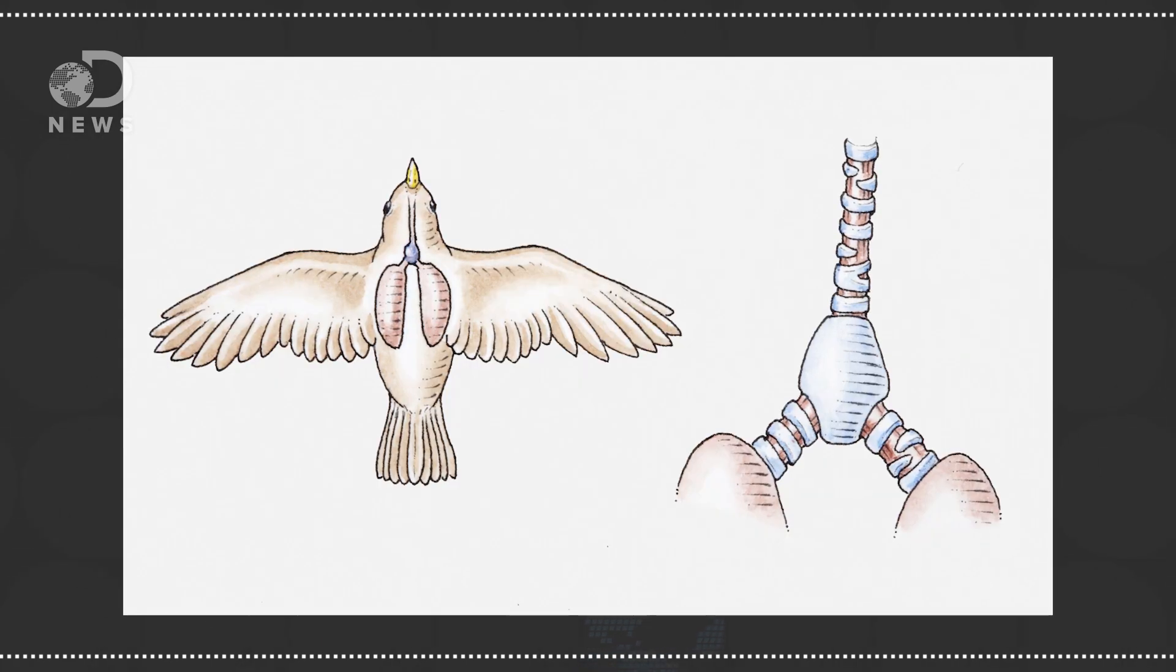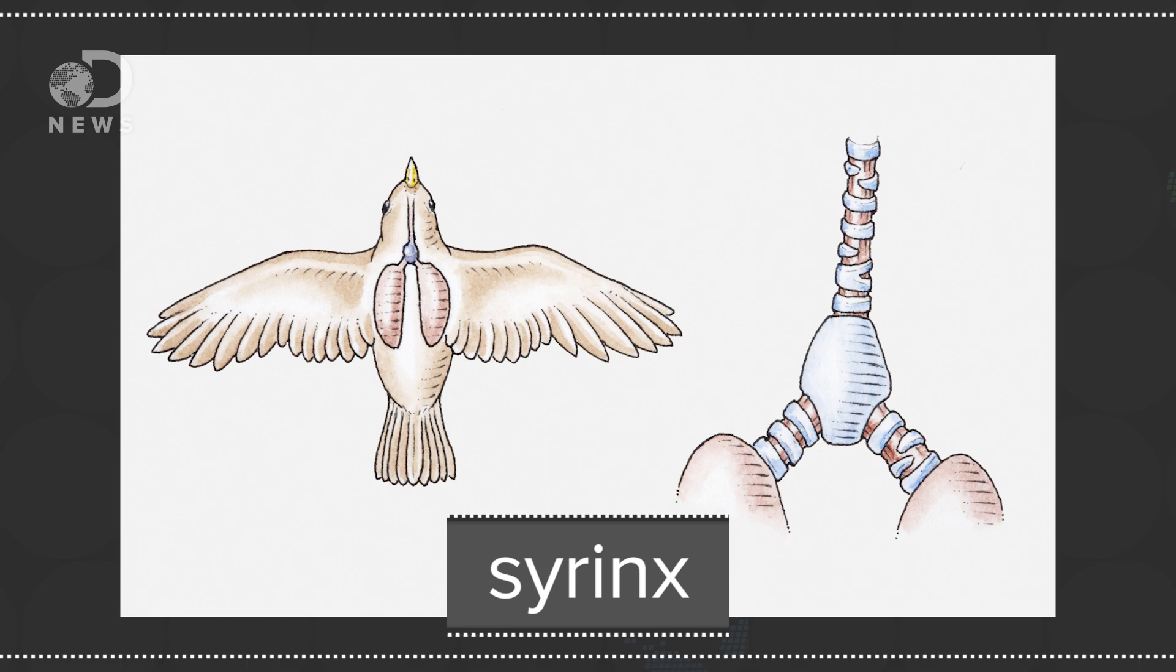Birds use a little different organ called a syrinx, which generates birdsong. Dr. Julia Clark of the University of Texas at Austin told me in an email, the syrinx had no precursor organ. It evolved with birds, after dinosaur extinction.